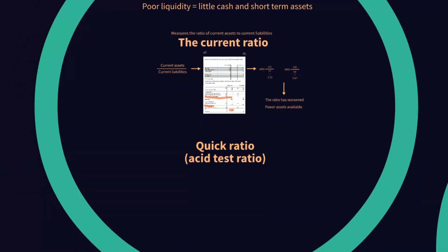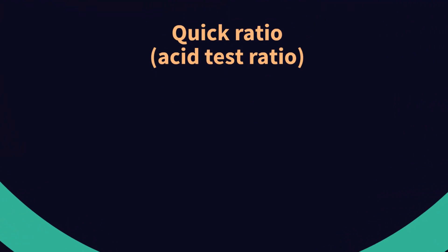The quick ratio, otherwise known as the acid test ratio, is a shorter-term measure of liquidity. This is generally used when you are looking at short-term decision making rather than long-term decision making, because it removes inventory. We can't remove inventory from the current ratio because of course it is an asset. But in the short term — for example, if we were looking at liquidity for the next week — we can't rely on our inventory because we're not going to be able to sell £59 million worth of inventory in the next week. So we do the exact same calculation but we exclude the inventory.